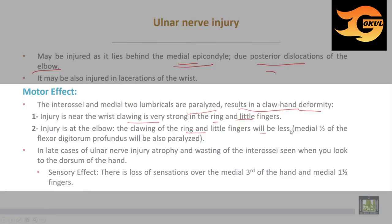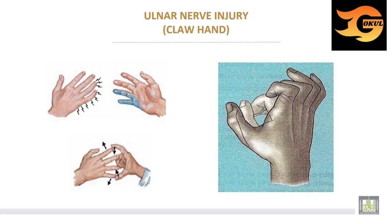The medial half of flexor digitorum profundus will also be paralyzed. In late cases of ulnar nerve injury there is atrophy and wasting of the interossei. The sensory effect is loss of sensation over the medial third of the hand and the medial one and a half fingers. This is ulnar nerve injury — there is clawing of the hand and loss of movements of the interossei muscles.